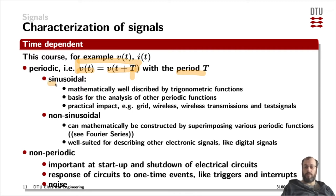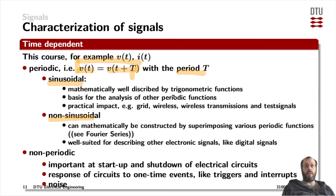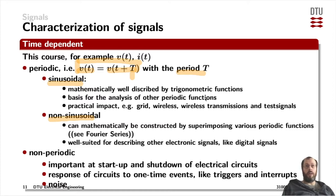Within periodic signals, we can have sinusoidal signals and non-sinusoidal signals — so there are subcategories again. Sinusoidal signals are mathematically very well described by trigonometric functions, that is a sine wave or a cosine wave, which are dependent on each other — just a phase delay of 90 degrees. Sinusoidal signals are the basis for the analysis of all other periodic functions, as we will see when we look at non-sinusoidal signals.